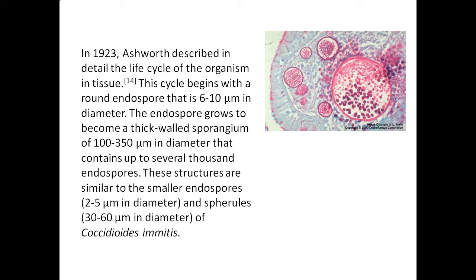In 1923, Ashworth described in detail the life cycle of the organism in tissue. This cycle begins with a round endospore that is 6–10 microns in diameter. The endospore grows to become a thick-walled sporangium of 100–350 microns that contains up to several thousand endospores. These structures are similar to the smaller endospores of 2–5 microns and spherules of 30–60 microns in diameter of Coccidioides immitis.